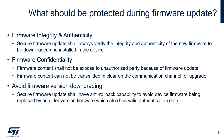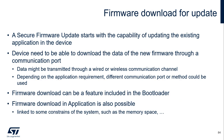The secure firmware update starts with the capability of updating the existing application inside the device. The device needs to be able to download the data of the new firmware through a communication port. Data might be transmitted through a wired or wireless communication channel. Depending on the application requirement, different communication port or method could be used. Firmware download can be a feature included in the bootloader, but the application might also have the capability to download the firmware.